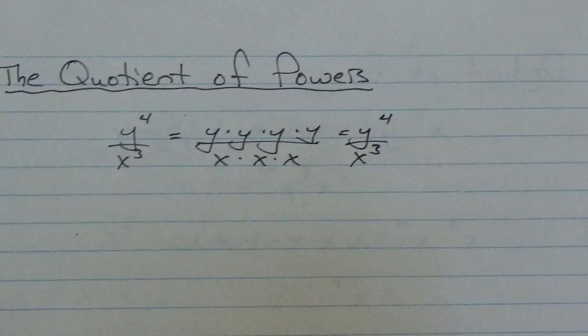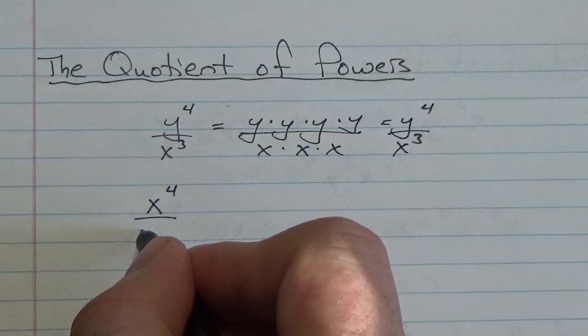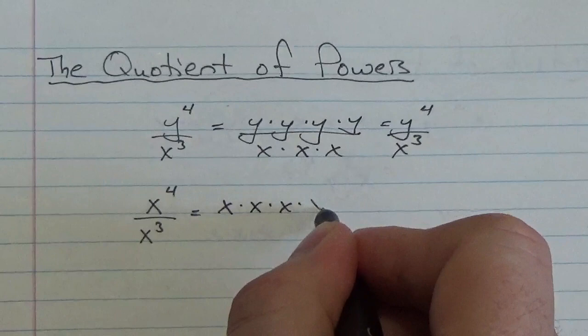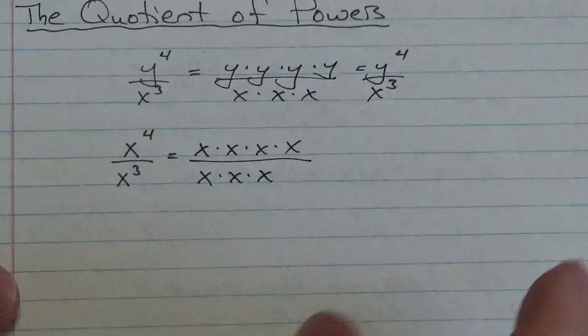Now, on the other hand, if this had been x to the fourth divided by x cubed, again, this tells me that I've got four factors of x in the numerator and three factors of x in the denominator. Now, here I can do something.